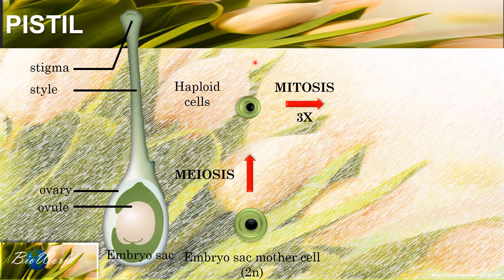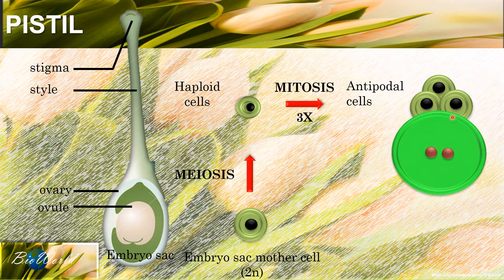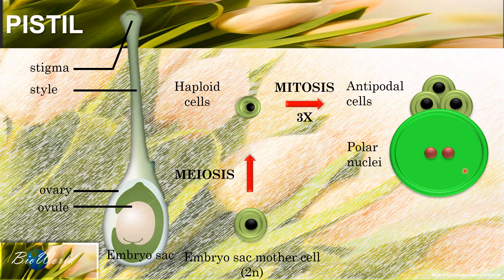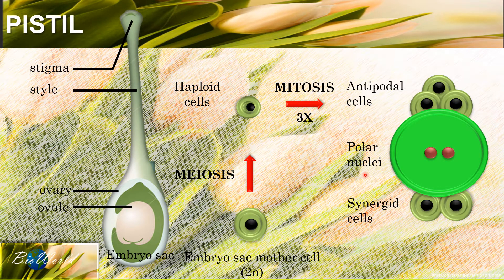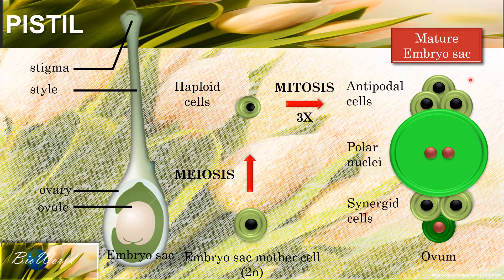In this way, eight nuclei will be produced. The eight nuclei have a specific arrangement: three on top called the antipodal cells, two nuclei sharing the cytoplasm as one cell called the polar nuclei, another two nuclei called the synergid cells, and finally one at the bottom which is the ovum. The polar nuclei and the ovum are highlighted because these two cells are the ones involved in double fertilization.